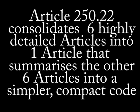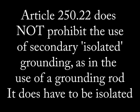That's a wrap on Article 250.22, Systems that are not to be grounded. You see now why the no-grounding rules are condensed into one article — it keeps you from hopping all over the codebook when there's no need to be overly specific. If you do need to get more technical, you know where to look. Also note that in Article 250.22, circuits not to be grounded, it is acceptable to ground them with a grounding rod and acceptable grounding methods.